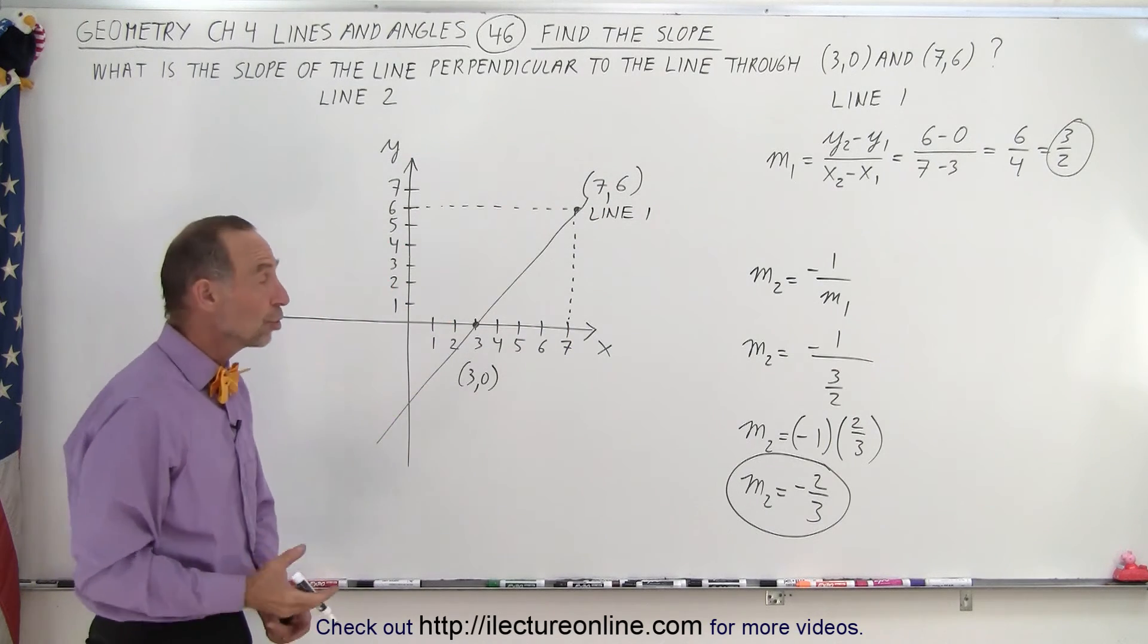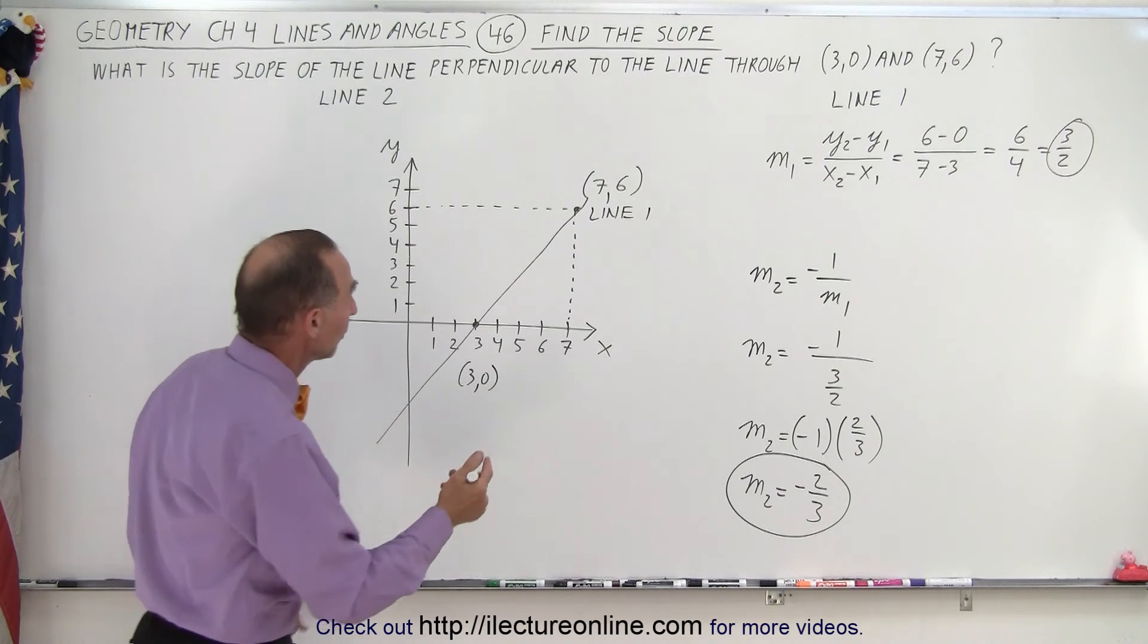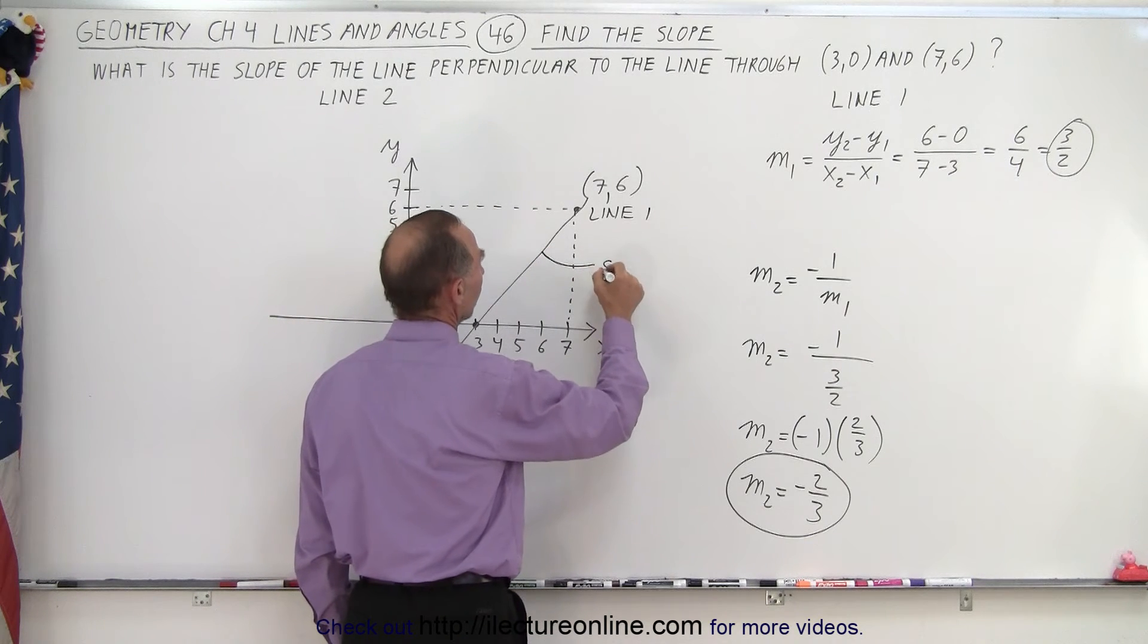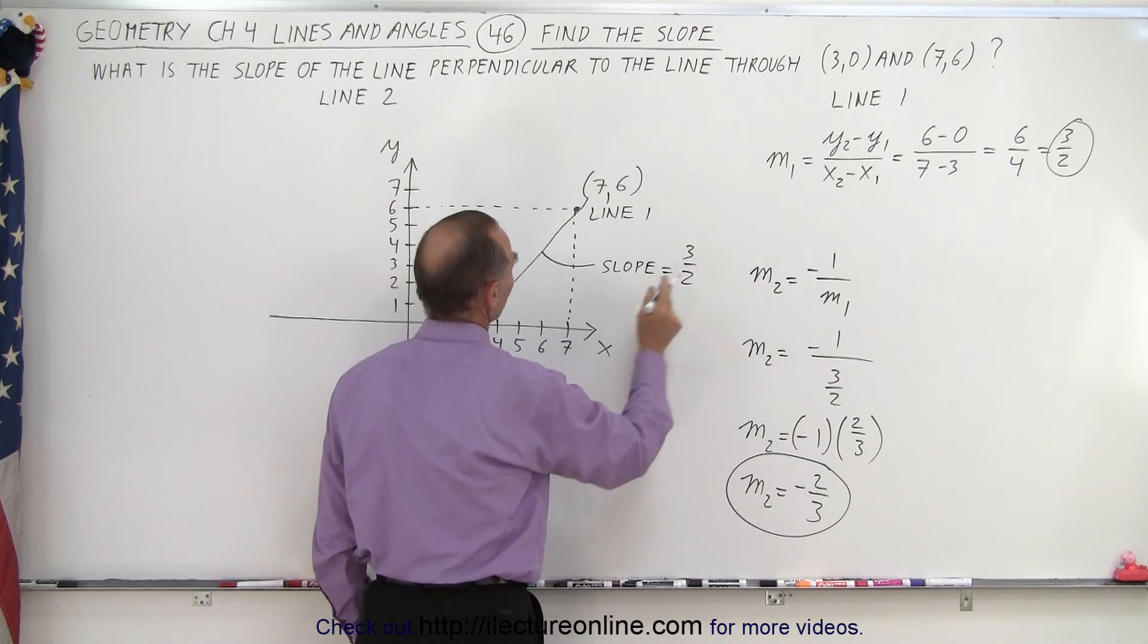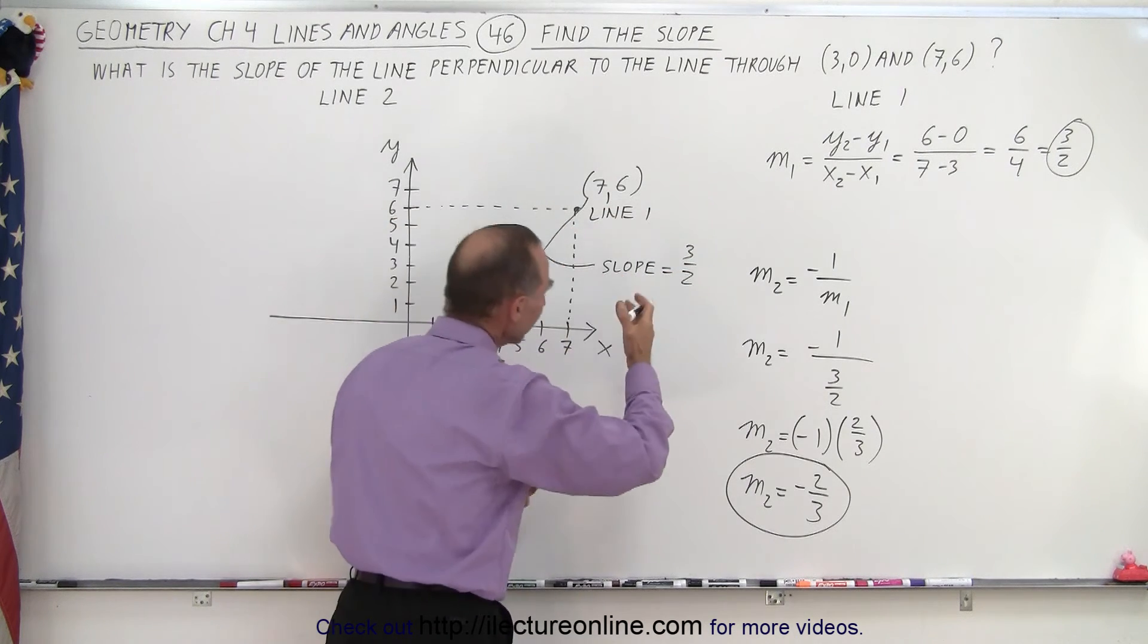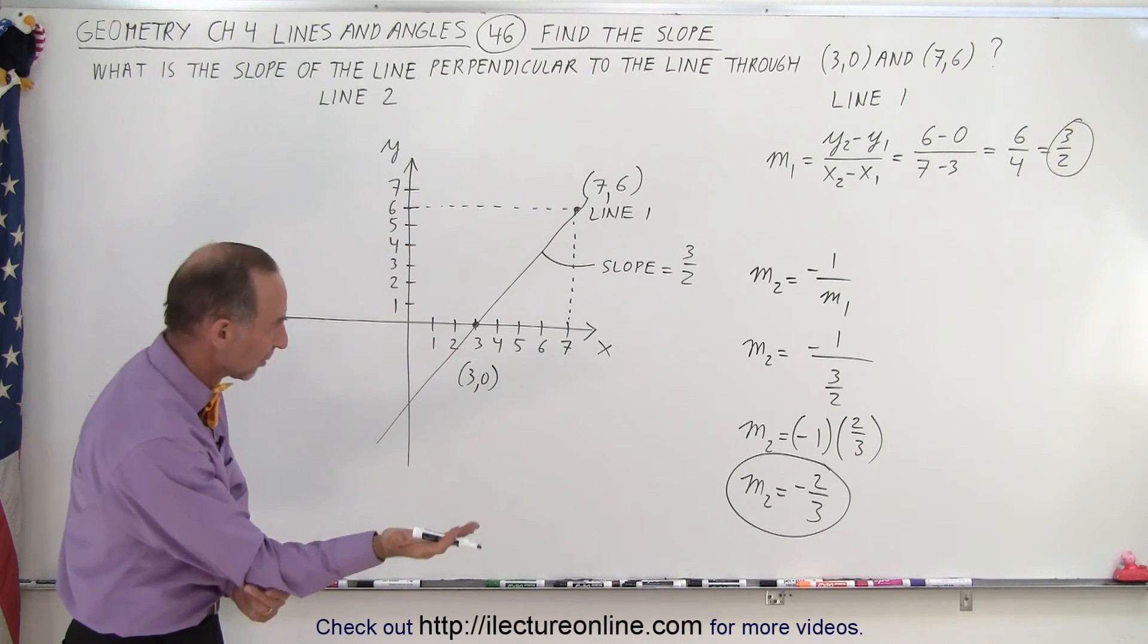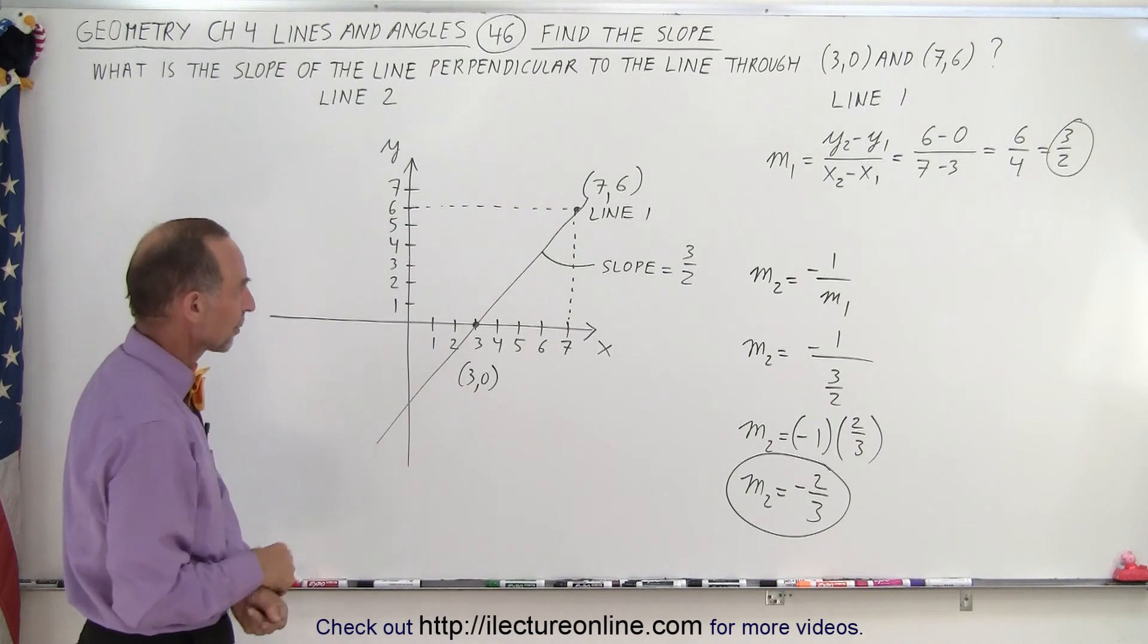All right. Now line 2 would have to be... We can see that the slope of that line is equal to 3 over 2. So it's a little bit steeper than a 45-degree angle. And that seems to be the case.